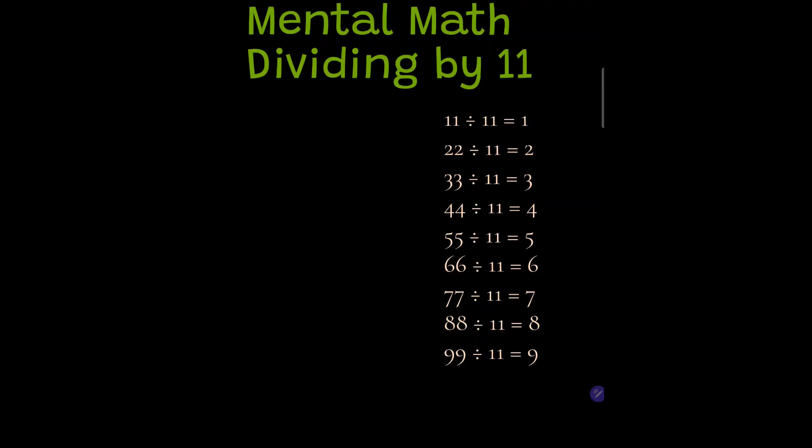Alright guys, in this video we're going to learn how to divide by 11 mentally. If you look at the right table right here, 11 divided by 11 is 1, 22 divided by 11 is 2, 33 divided by 11 is 3. These are common numbers because they're all multiples of 11, so dividing by 11 is easy.